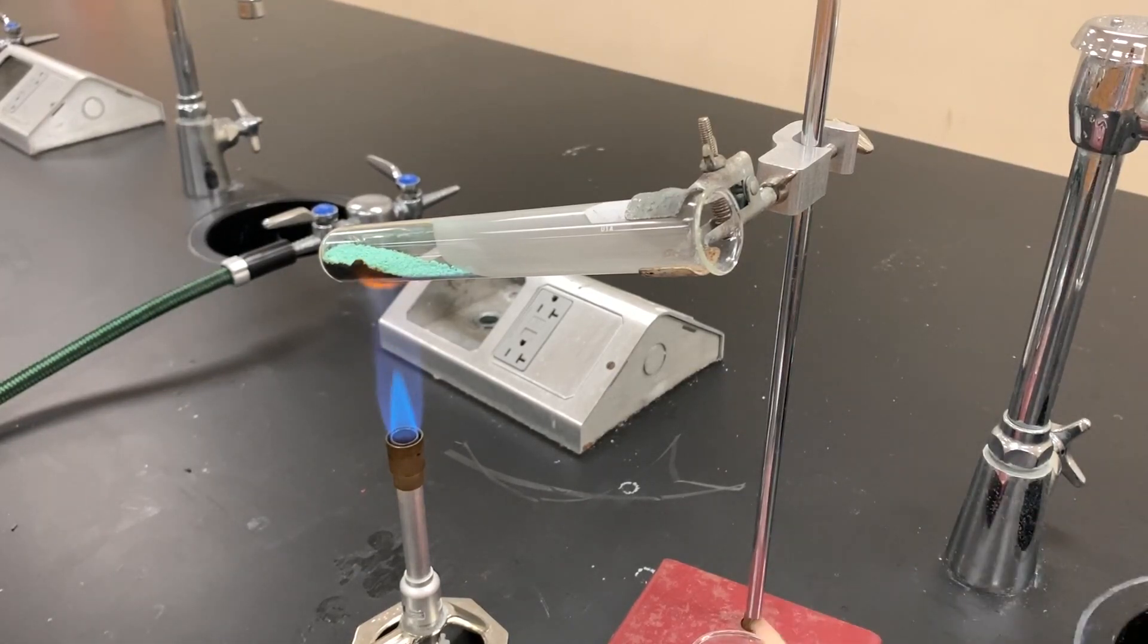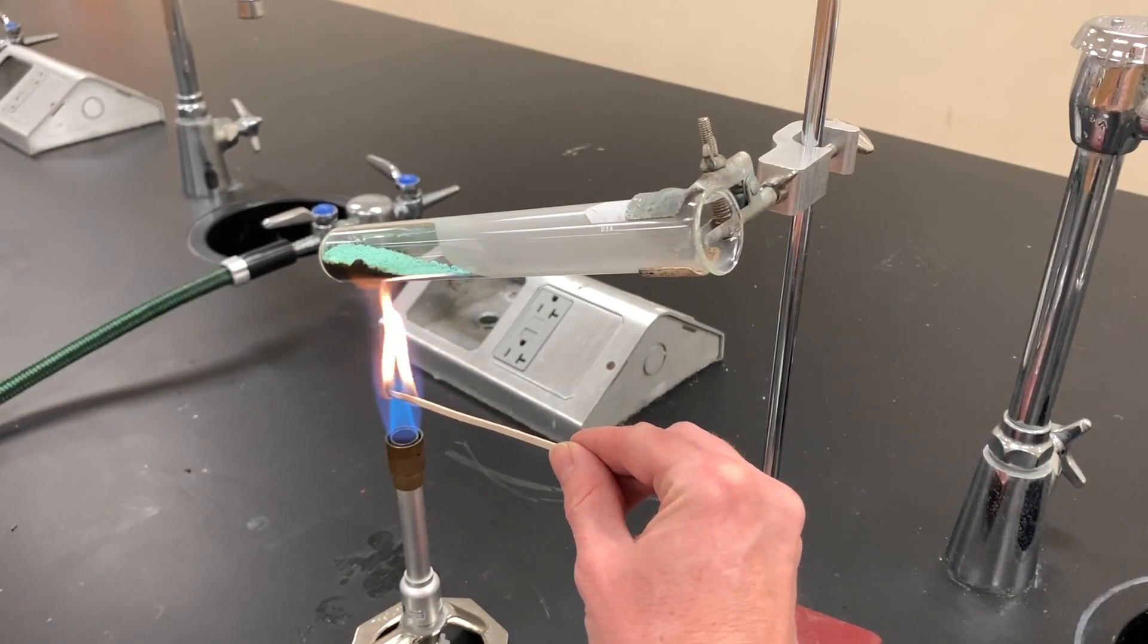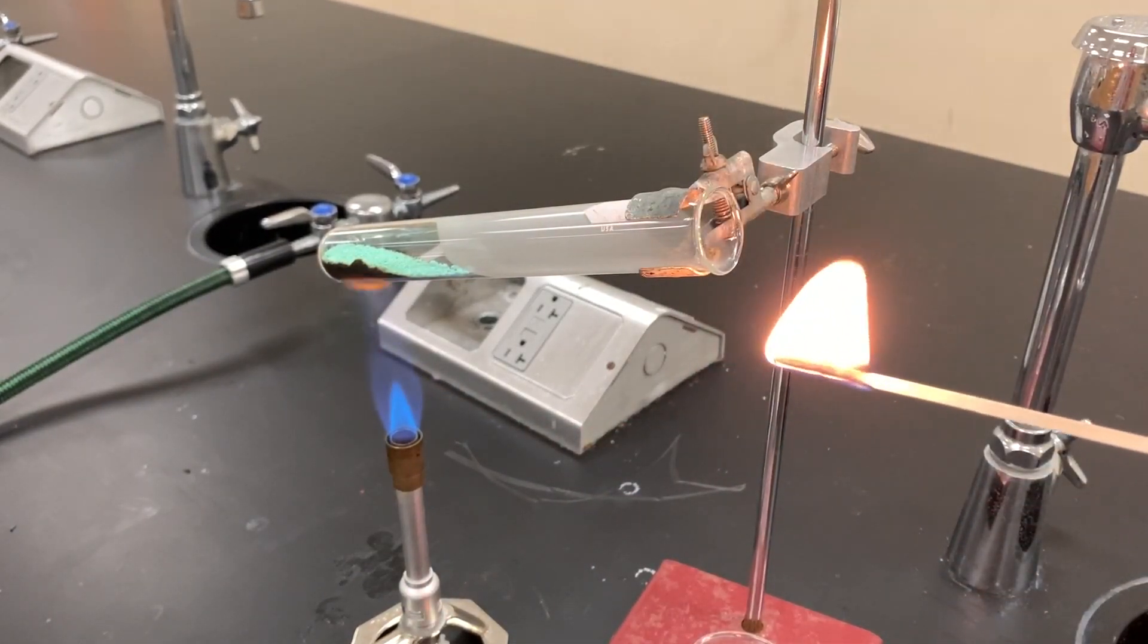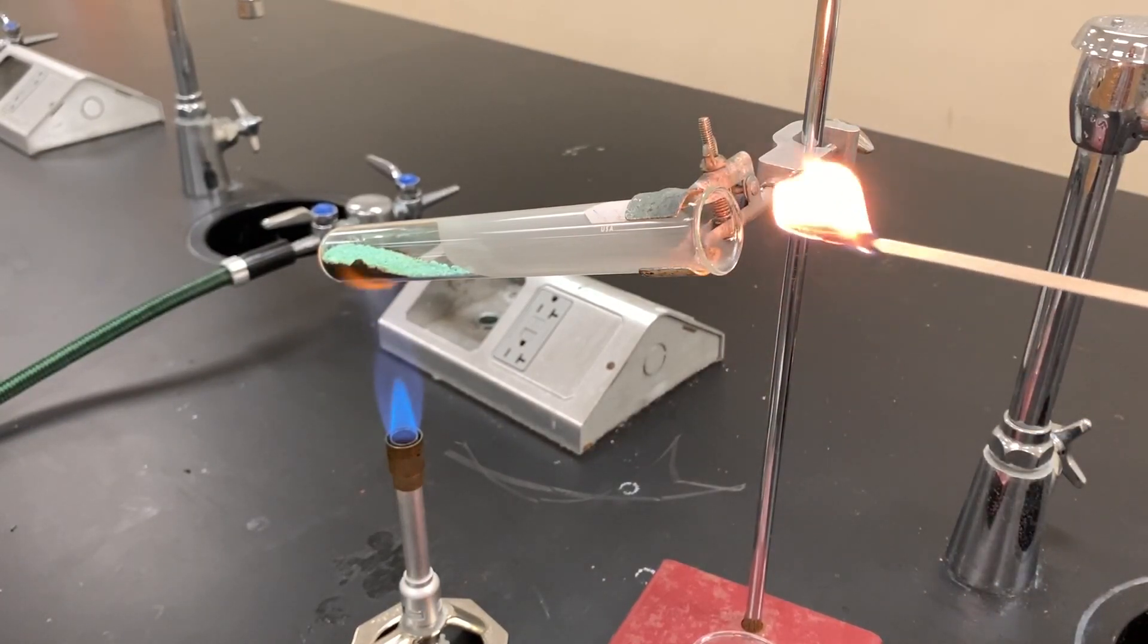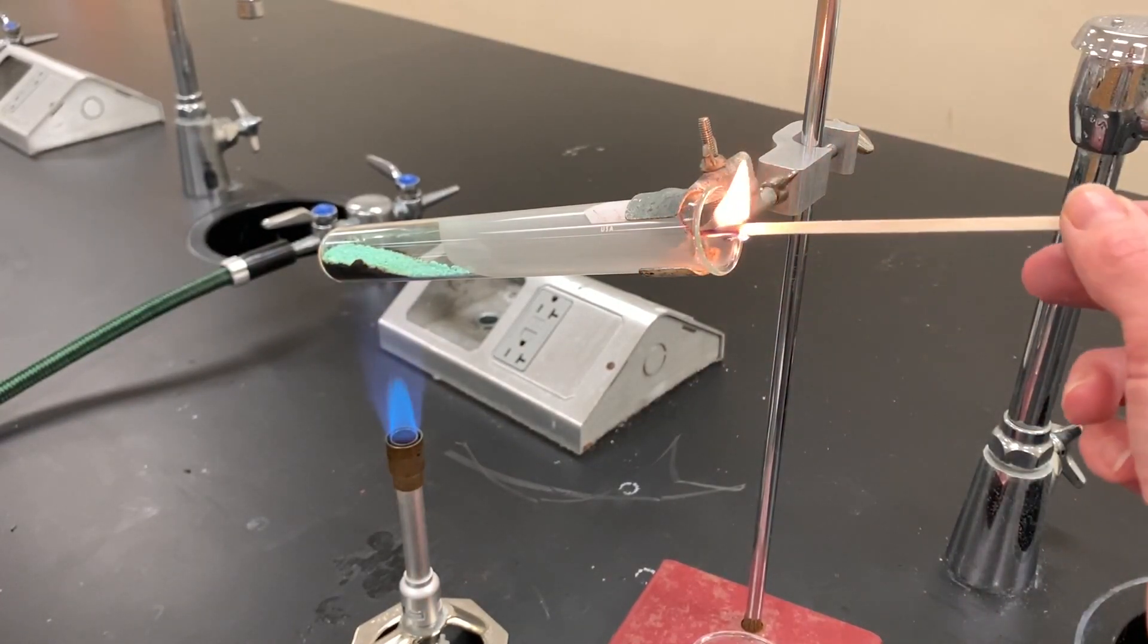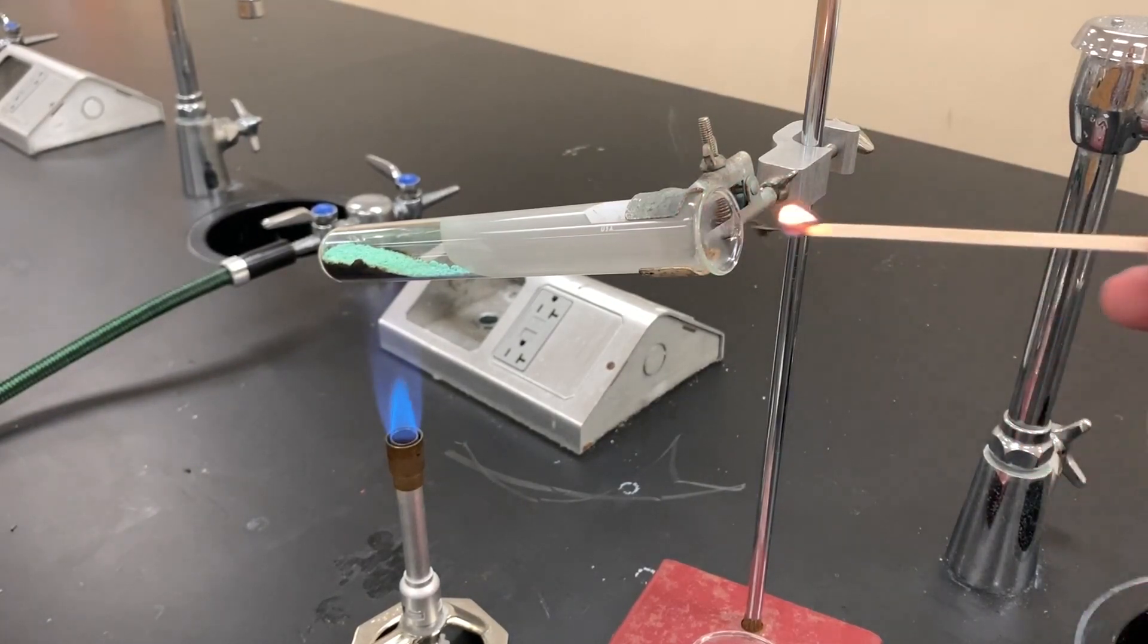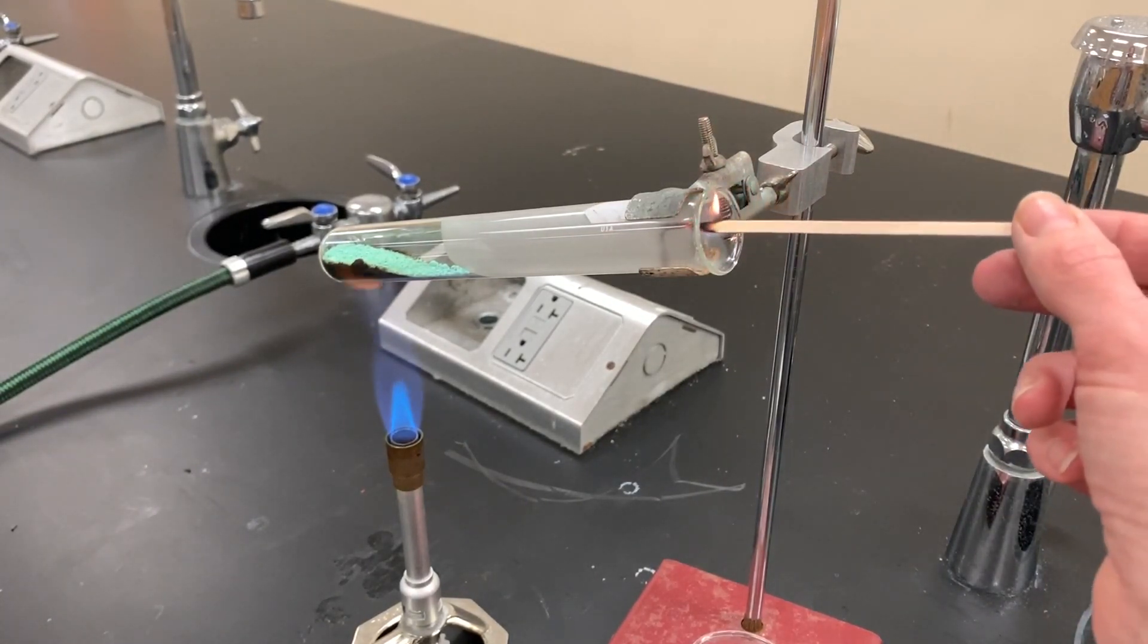One test is to take a wood splint and light it. If the wood splint is extinguished, that means carbon dioxide is probably leaving the test tube as a product, and that definitely looks like that is happening as I put this near the inside of the test tube.